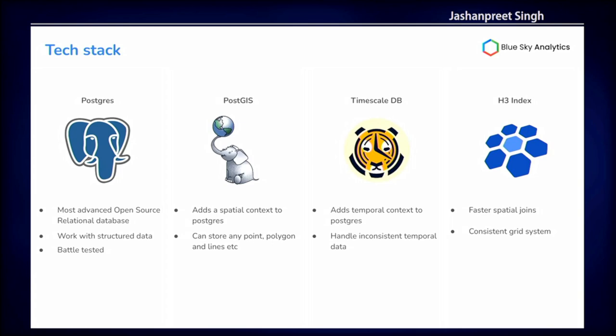TimescaleDB can handle inconsistent temporal data. Let's say you have data with an hourly frequency — ideally 24 values in a day — but sometimes the data is inconsistent: the satellite is down or it's coming at different intervals. There are also timestamp challenges, like you're expecting data at 3 p.m. exactly but it's coming at 3:15. TimescaleDB handles all those challenges. You can also use functions called GapFill to fill gaps for inconsistent data, and aggregate temporal data — like viewing daily data as a single monthly value. Timescale handles all those things really well.